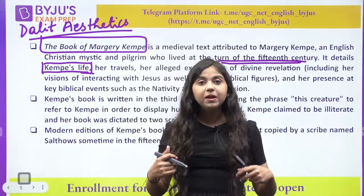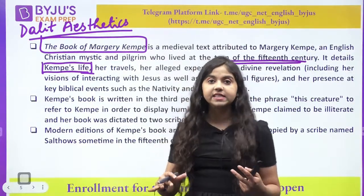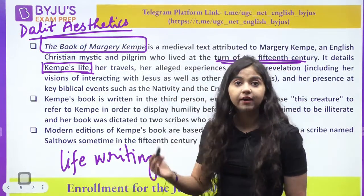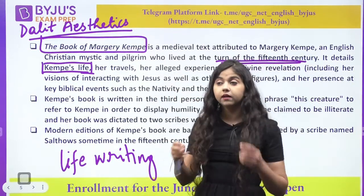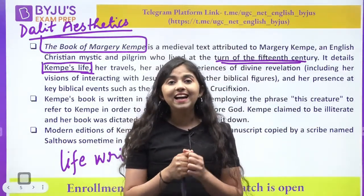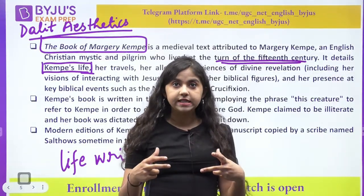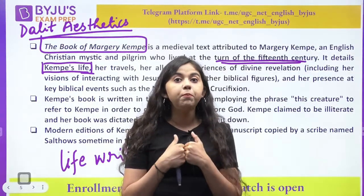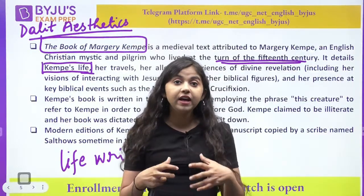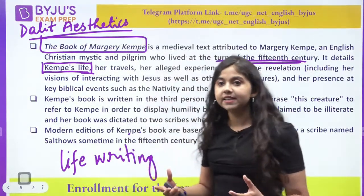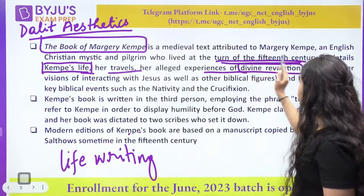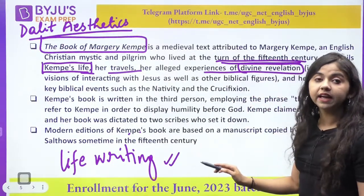If I am having an experience, the anubhav — will I be able to express it? The same thing is happening in life writing. Your devotional literature is also coming under life writing. What is in life writing? Exploitative literature — Black writings, Dalit Aesthetics — people who have experienced toil and exploitation are writing. Devotional writings also go like: my experience with God is something very personal; I will be able to tell you about miracles I experienced. It is very personal. Life writing is like this — how Kempe's life, her travels, her experiences of divine revelation, this is all life writing.